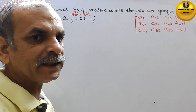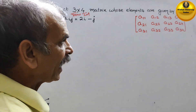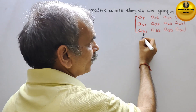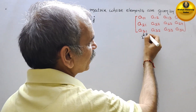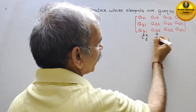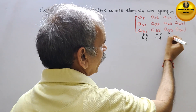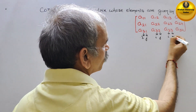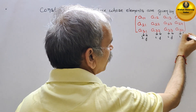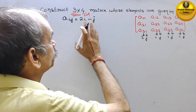Now understand this. Here i and j are given — the first one is your row, that is i, and the second is your column, that is j. Likewise, everywhere there is i and j — the first is i and the second is j. These values we have to substitute into the formula.